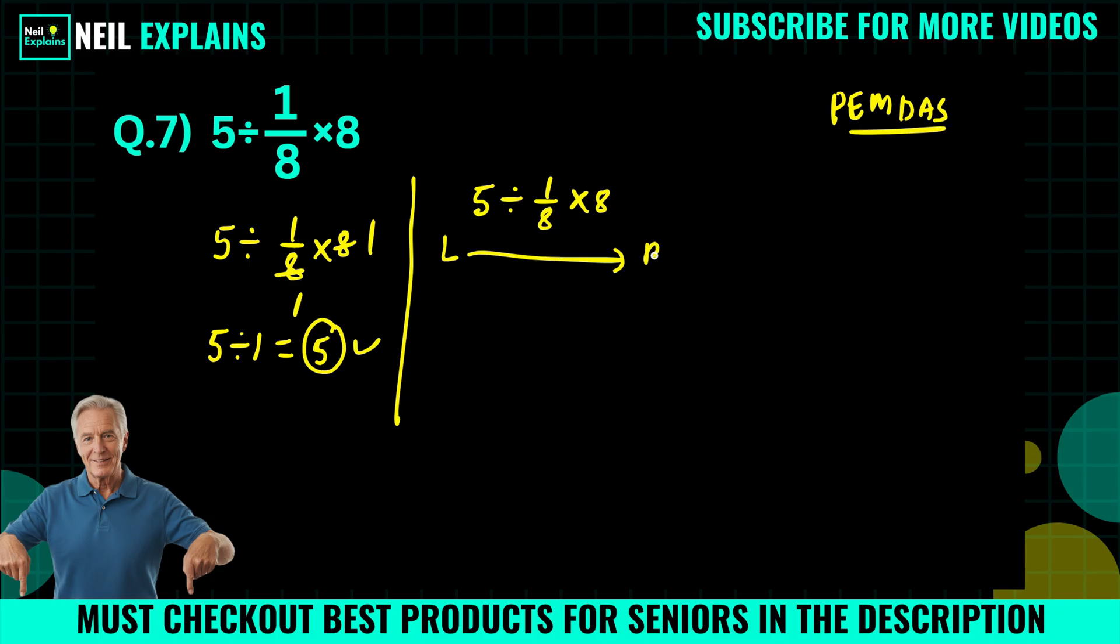Okay, left to right. And first we have to solve this: 5 divided by 1/8.